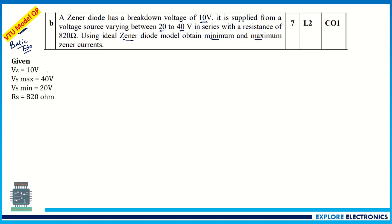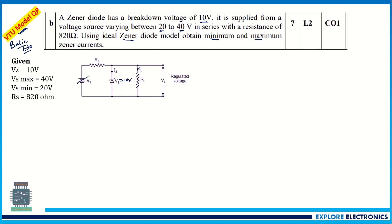Let me write the given things: Vz = 10 volts, Vs is variable with a maximum value of 40 volts and a minimum value of 20 volts, so it varies from 20 to 40 volts. Rs = 820 ohms. We need to find the maximum and minimum values of IZ, the zener current.